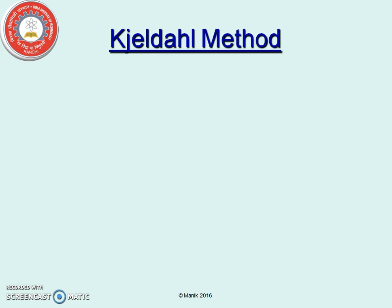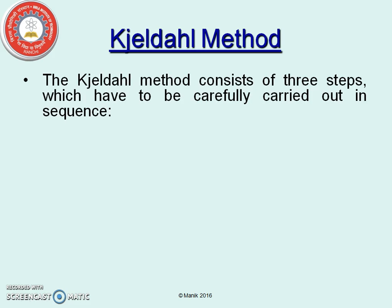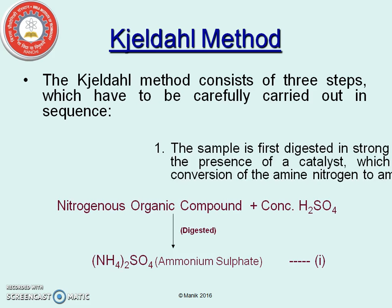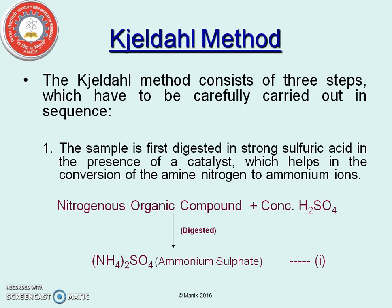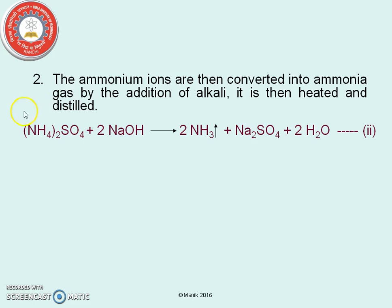Kjeldahl's method — reaction with hydrochloric acid. This must be carried out in sequence, and there are three steps. The first one is the nitrogenous organic compound is treated with concentrated sulfuric acid and we are going to get ammonium sulfate. In the second reaction, this ammonium sulfate is converted into ammonia gas by treatment with alkali.